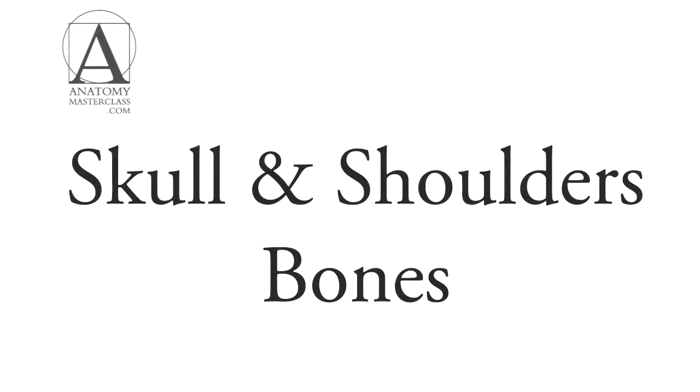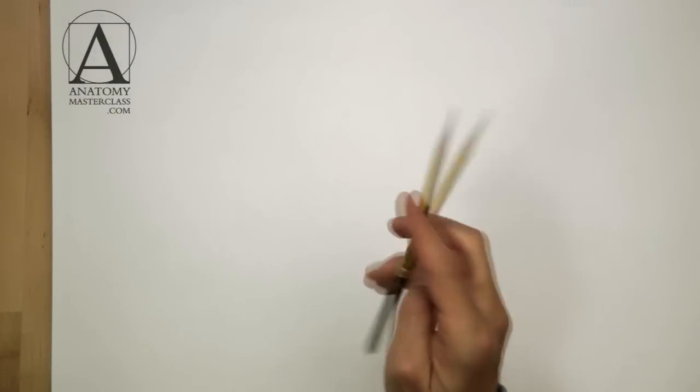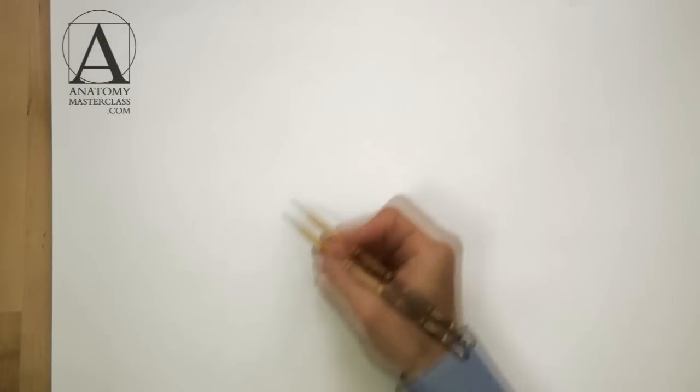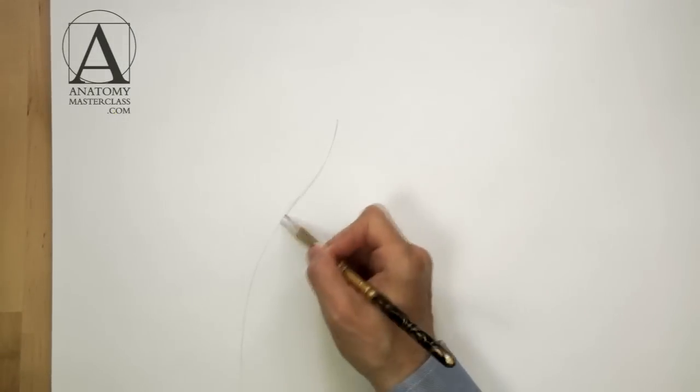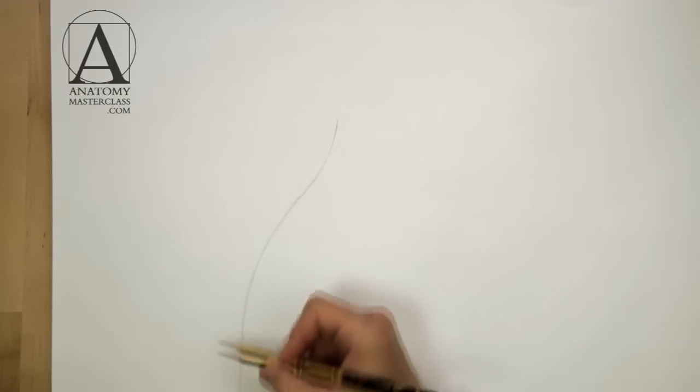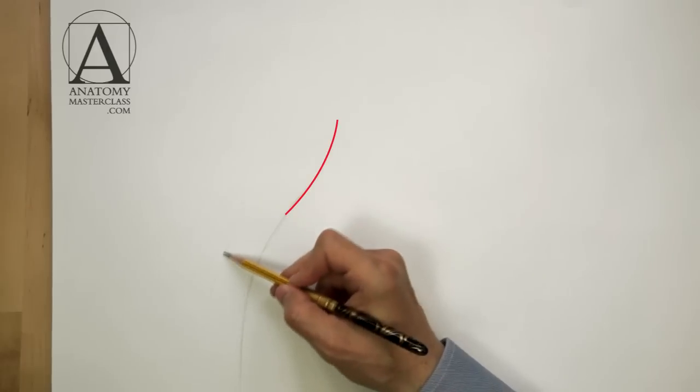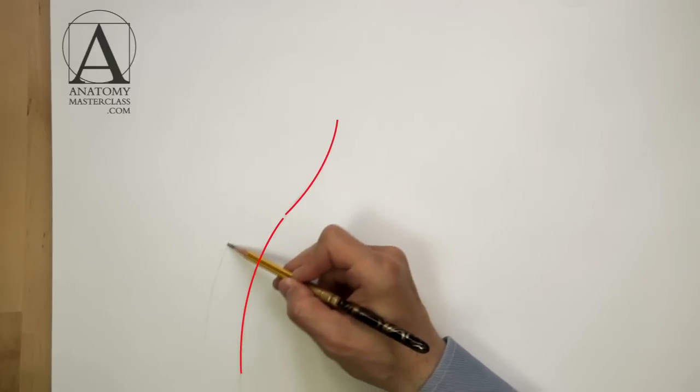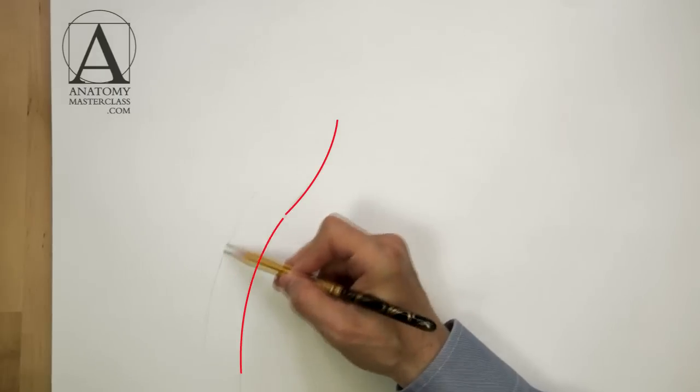The skull and shoulder bones. Let's begin with the skeletal anatomy. The spinal column has two distinct curves, the curve of the neck region and the curve of the ribcage region. They are arched in opposite directions.